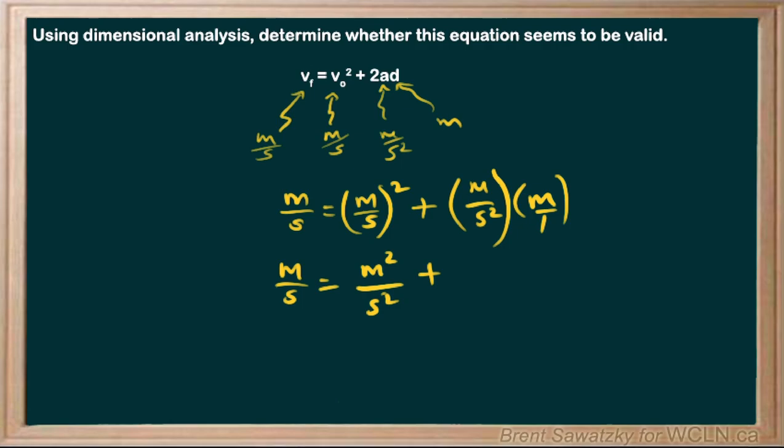We can write the one underneath, if that helps us. And say, well, meters times meters is meters squared. And seconds squared times one is seconds squared.